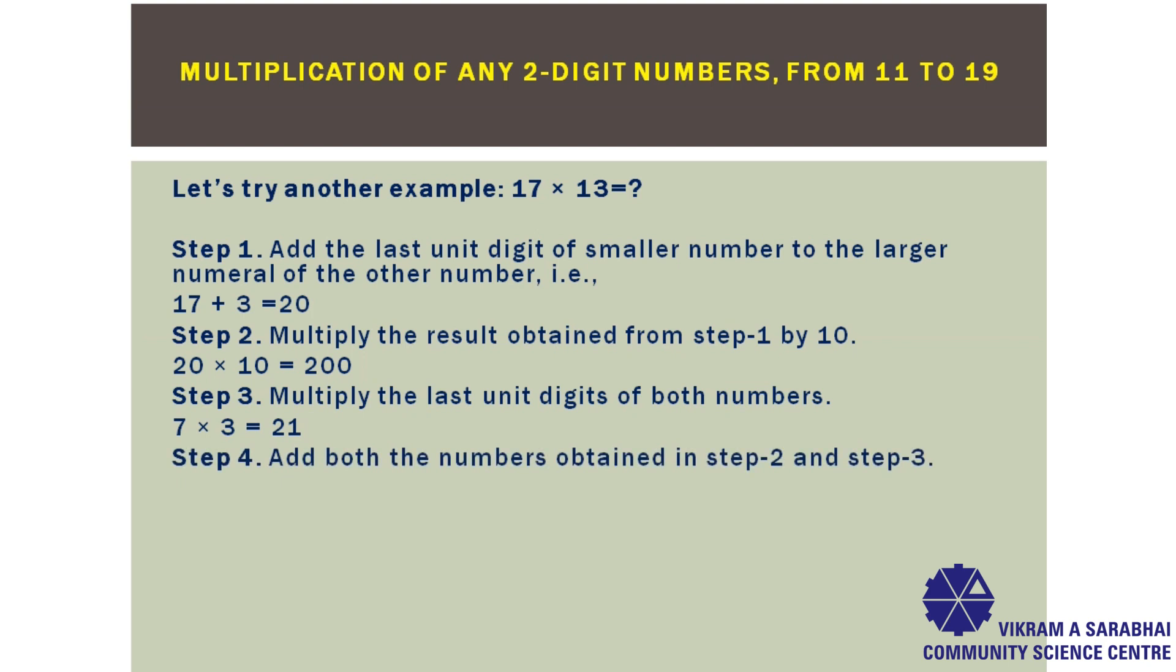In the final step, add both the numbers obtained in step 2 and step 3. From step 2, we have 200 and from step 3, 21. So, 200 plus 21 will get 221. So, the answer will be 221.